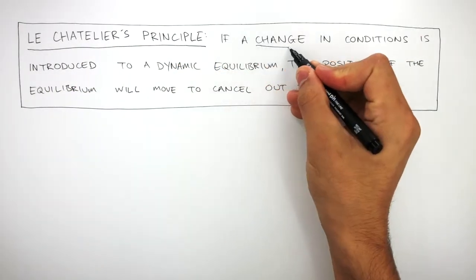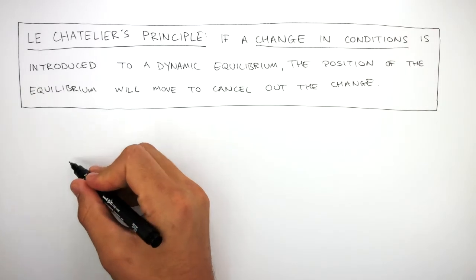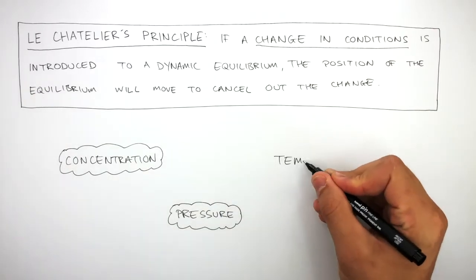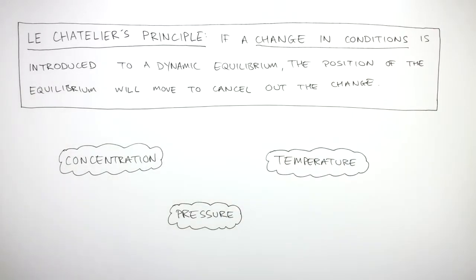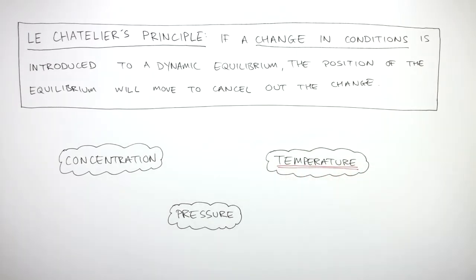A change in conditions includes concentration, pressure, and temperature. In this video, we're going to use Le Chatelier's Principle to explain how changing the temperature affects the position of the equilibrium.